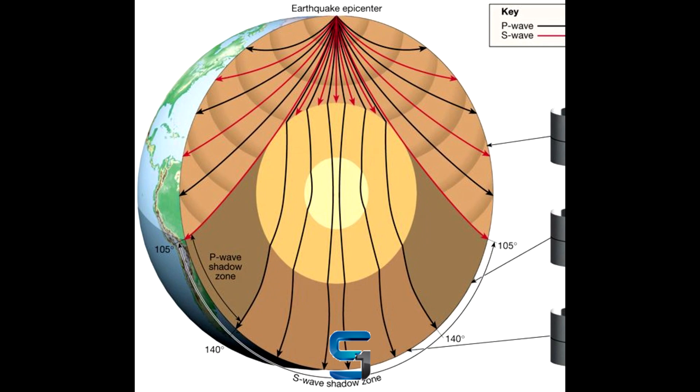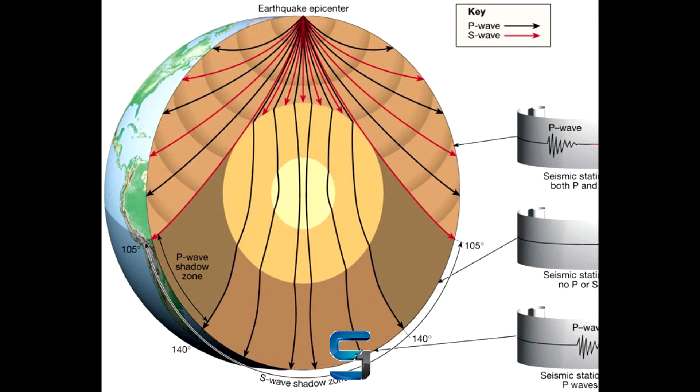In 1914, German-American seismologist Benno Guttenberg, studying data collected by early seismometers placed around the world, found that S waves were only detected up to a distance of about 104 degrees.